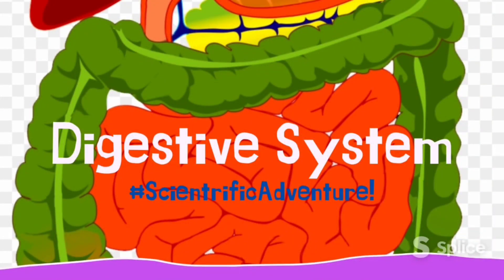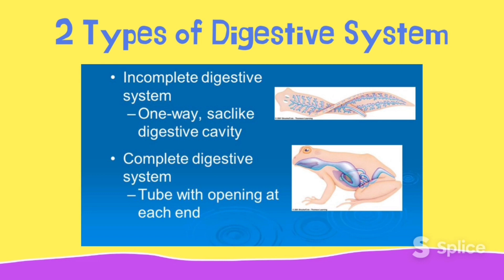Let's talk about the digestive system. The digestive system has two types: incomplete and complete. When we say incomplete, these organisms only have one opening on their digestive tract. A complete digestive system has two openings on its digestive tract, like us — humans and some animals.